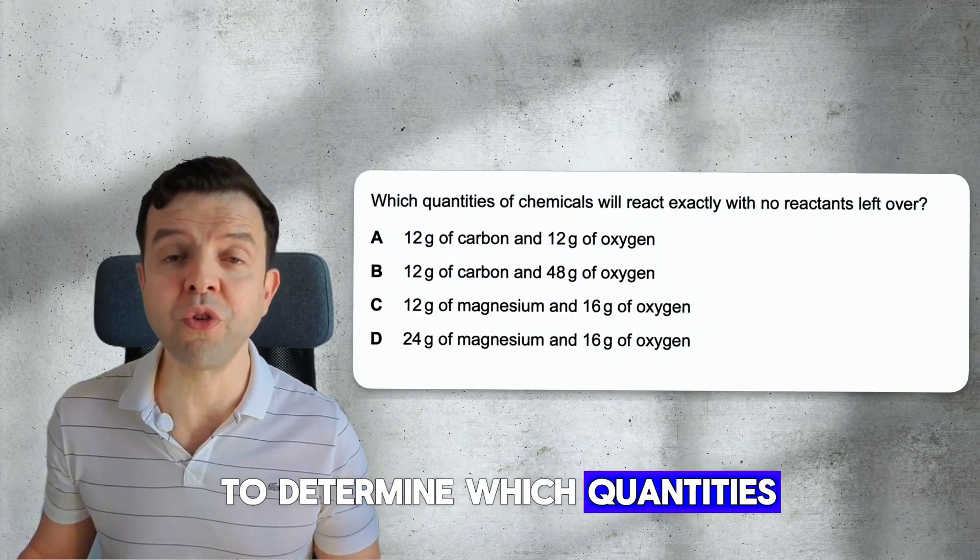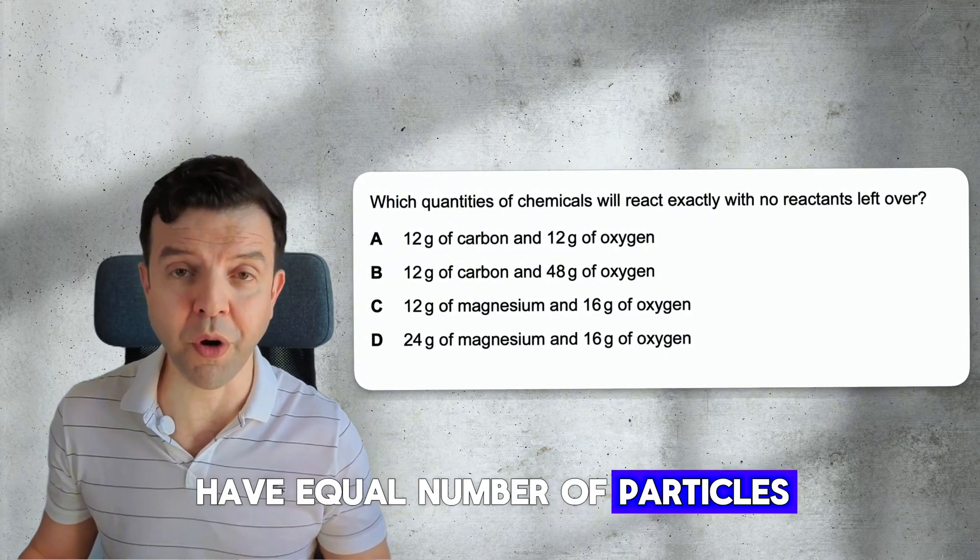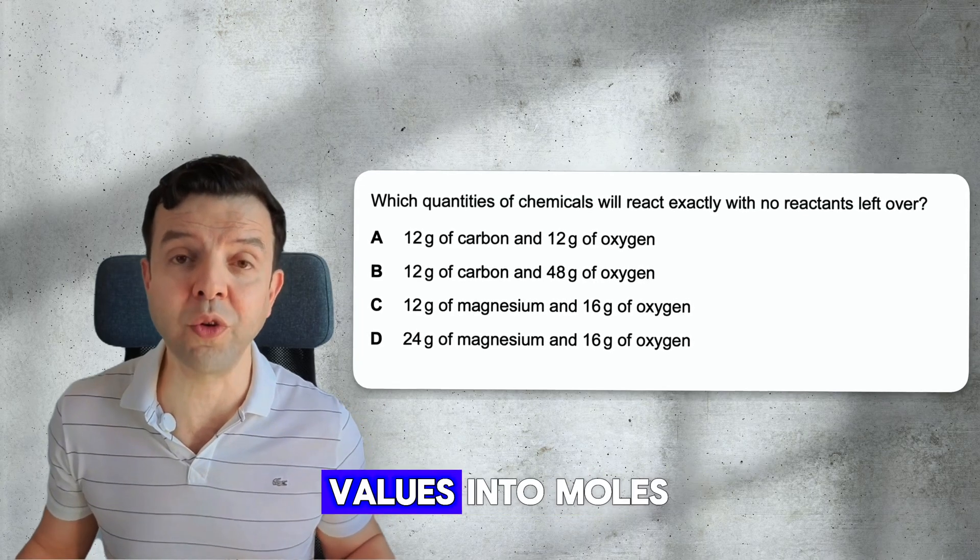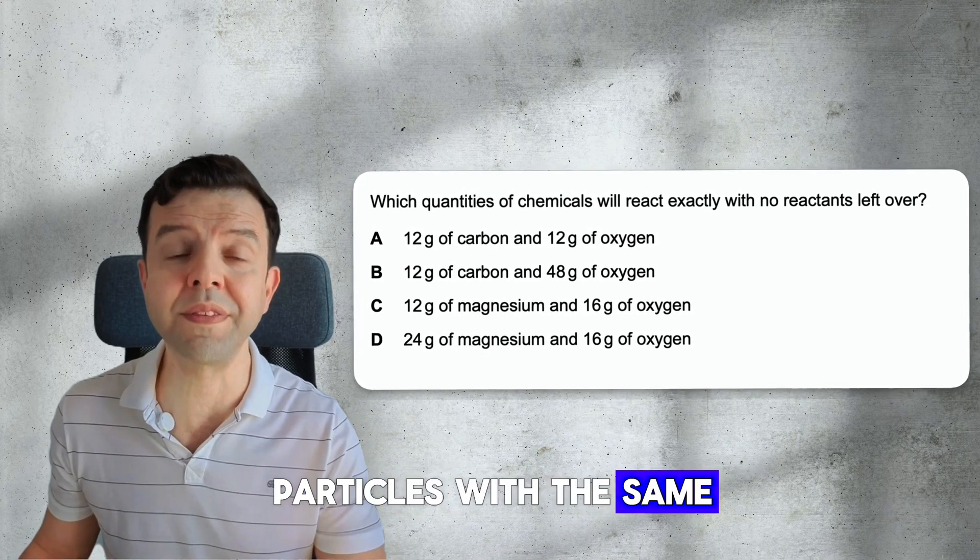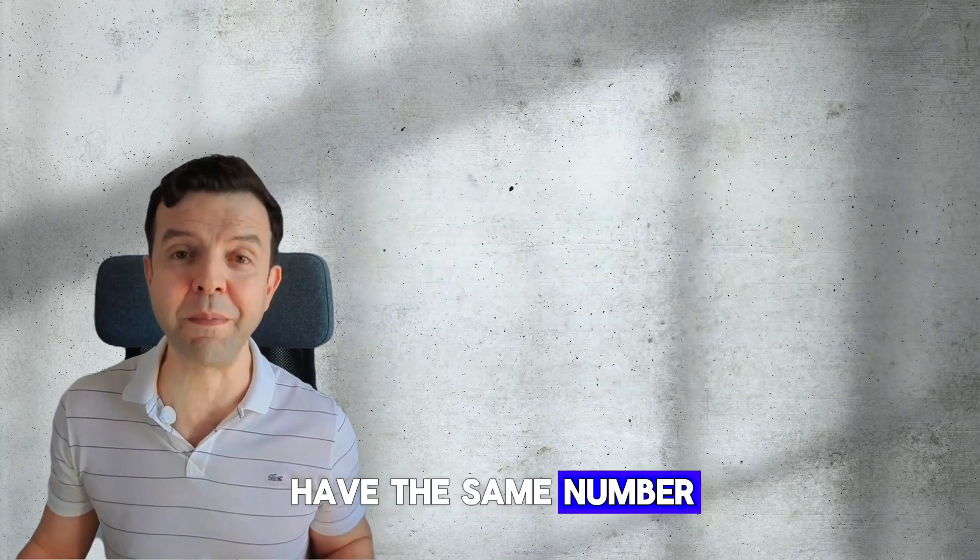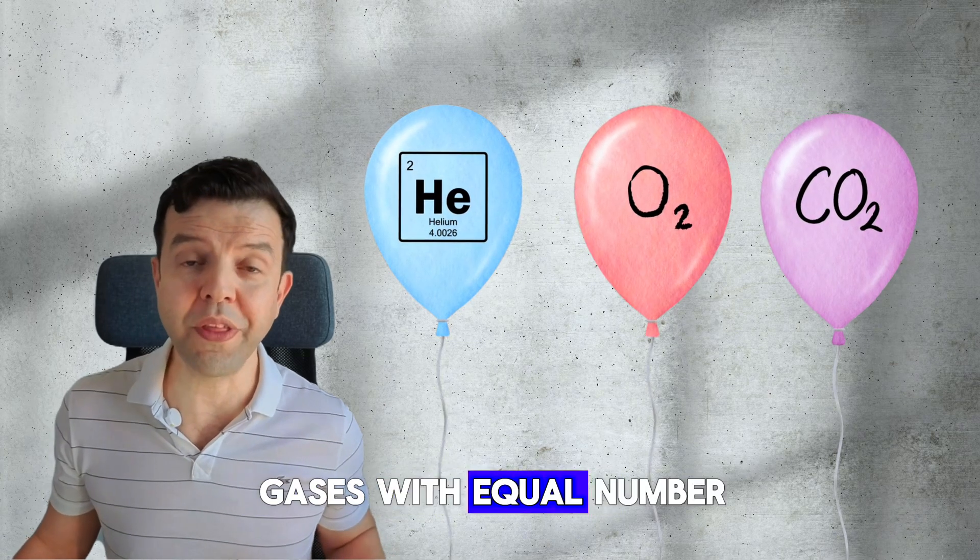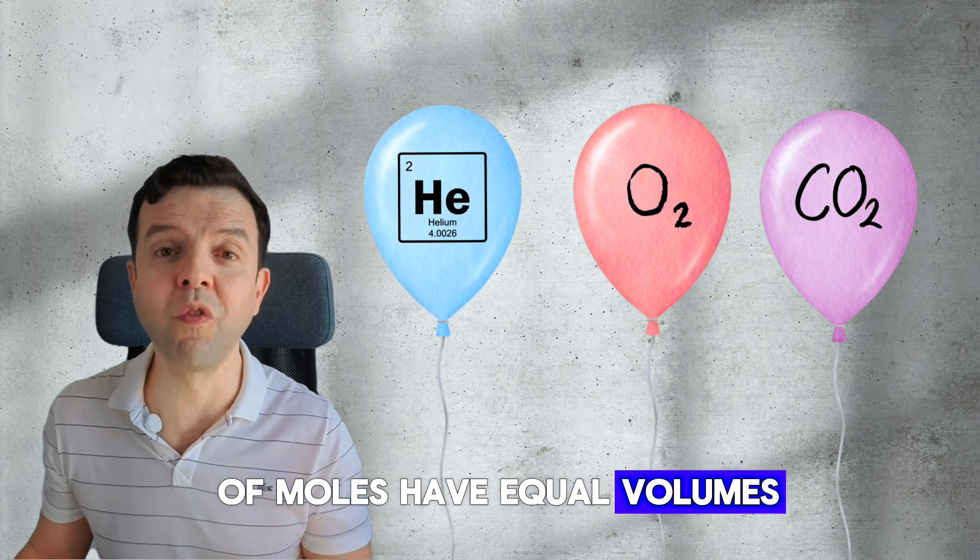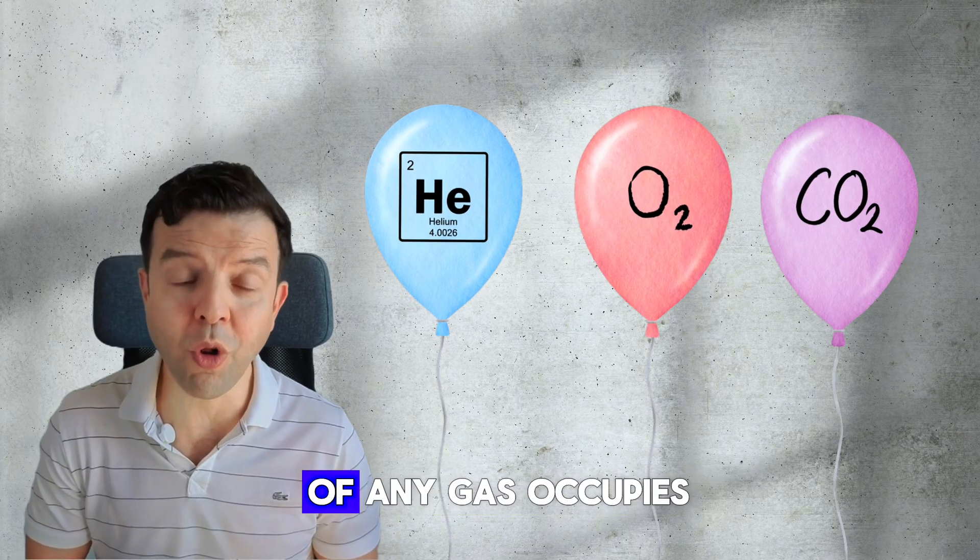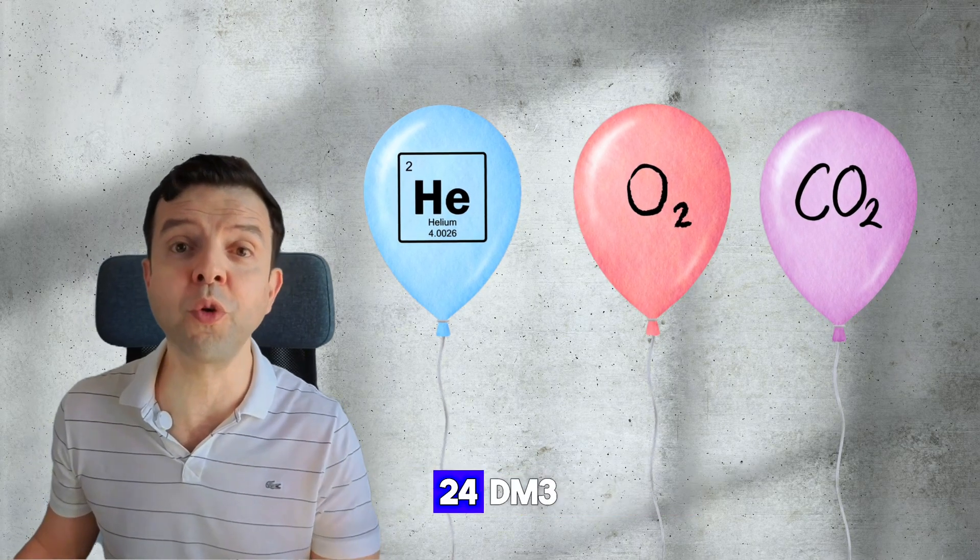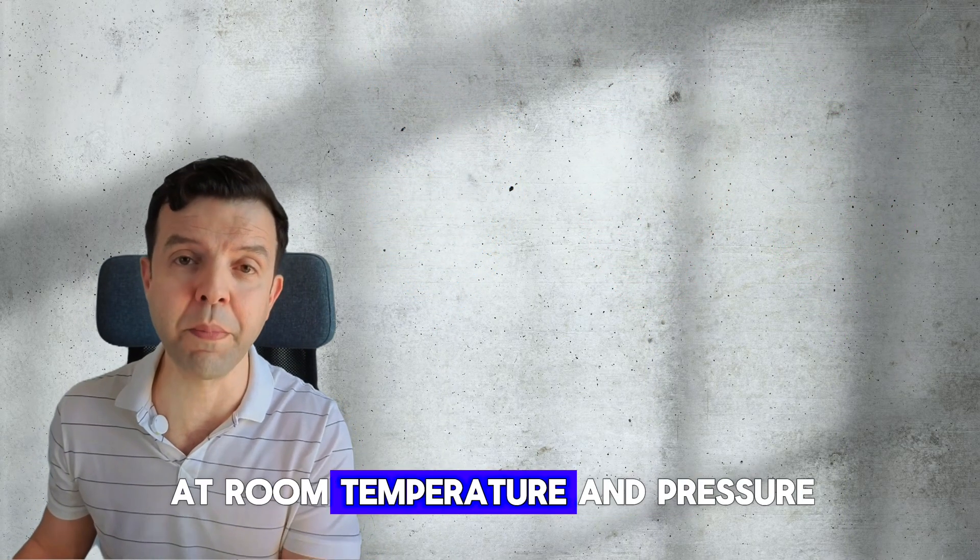Moving now to the mole concept. When you've been asked to determine which quantities have equal number of particles, you need to convert these values into moles. Particles with the same number of moles have the same number of particles. Gases with equal number of moles have equal volumes. That's because one mole of any gas occupies 24 dm cubed at room temperature and pressure.